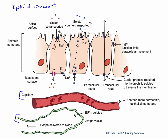By definition, epithelial membranes are covering an exposed surface. And so they have a free surface known as the apical surface or apical membrane, and they have an attached surface known as the basolateral surface.